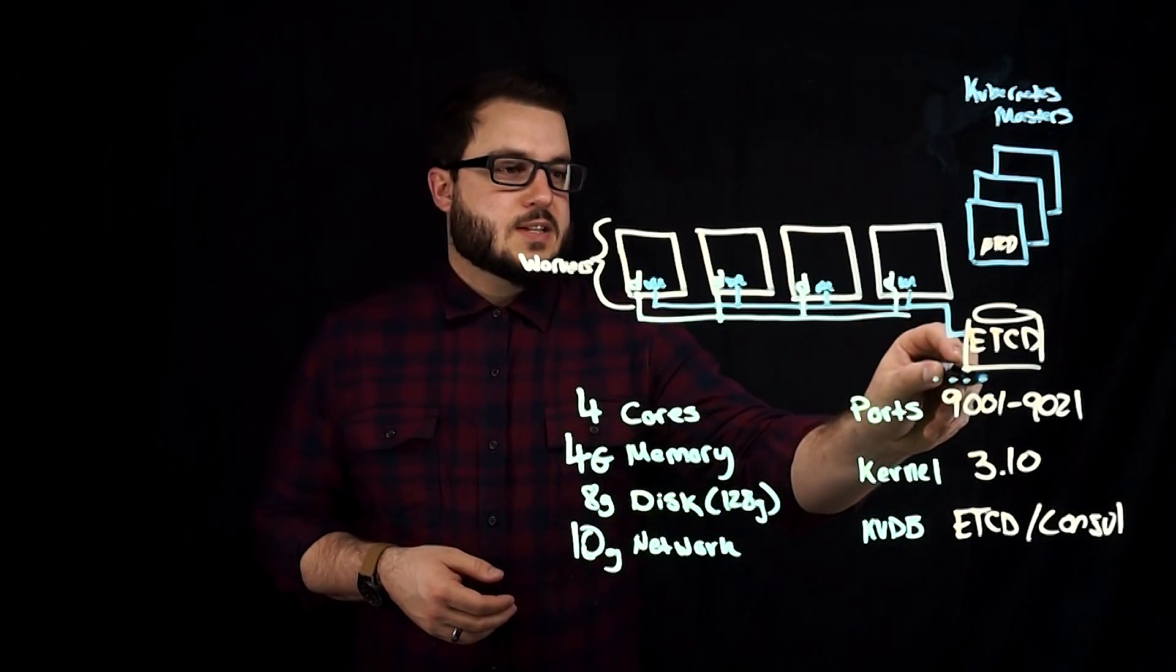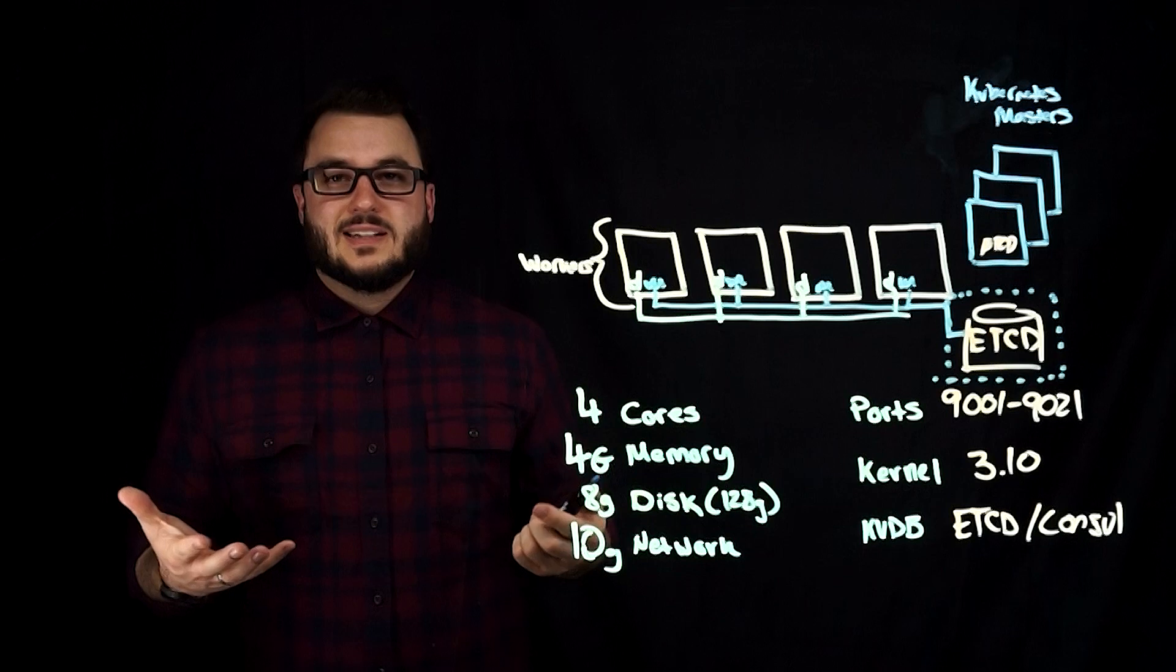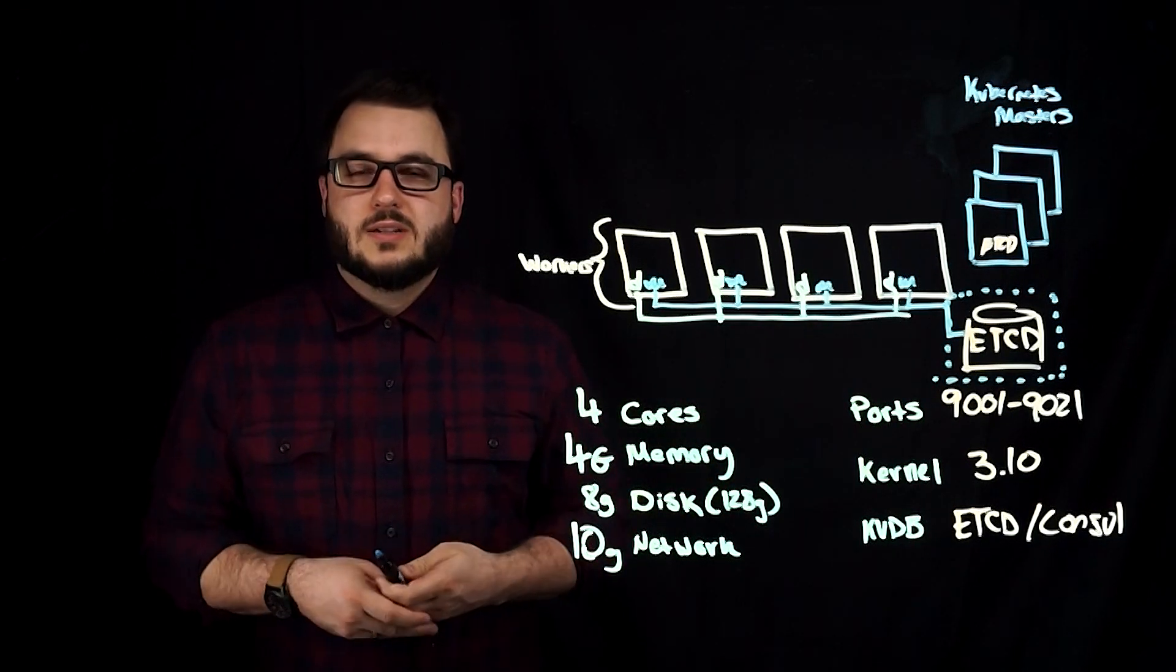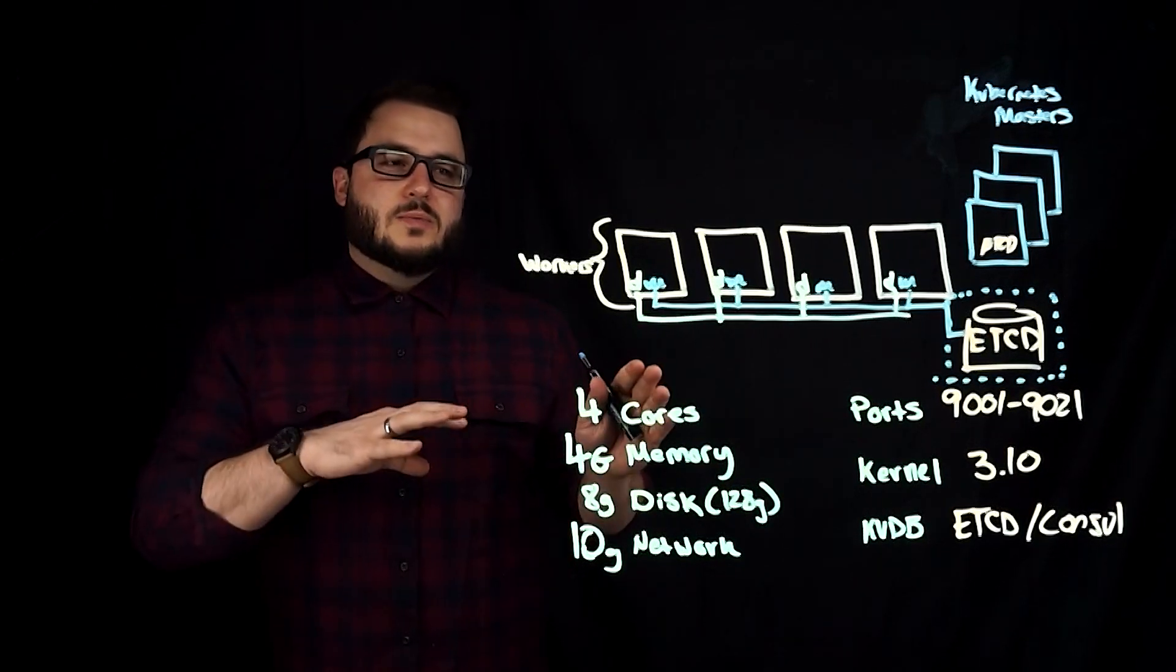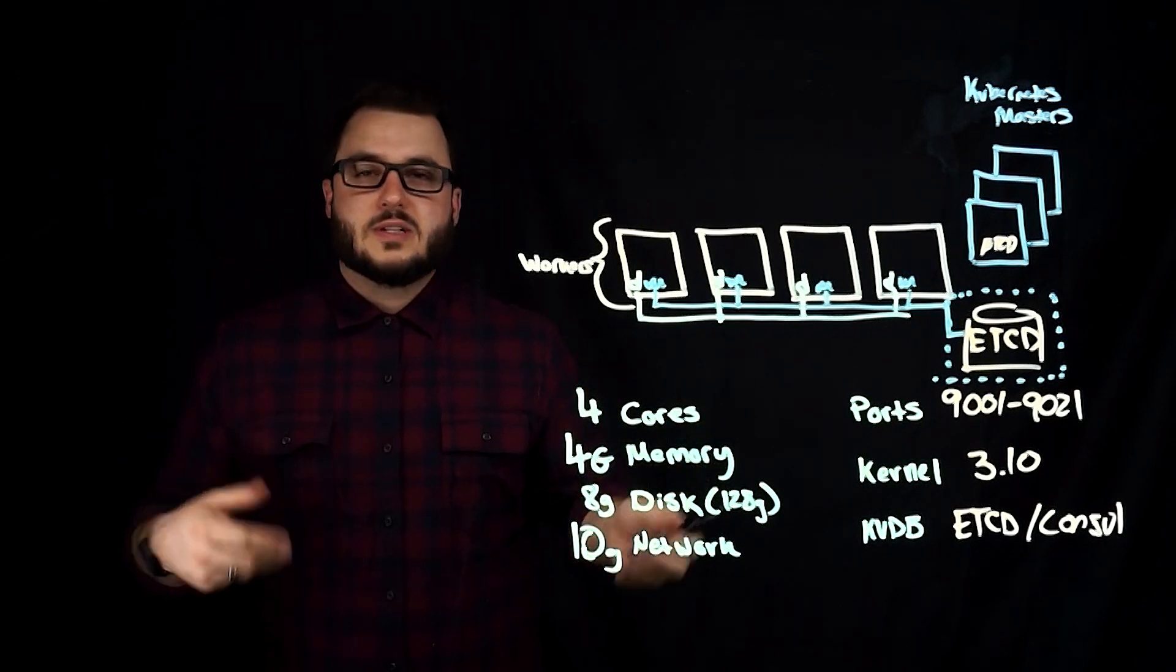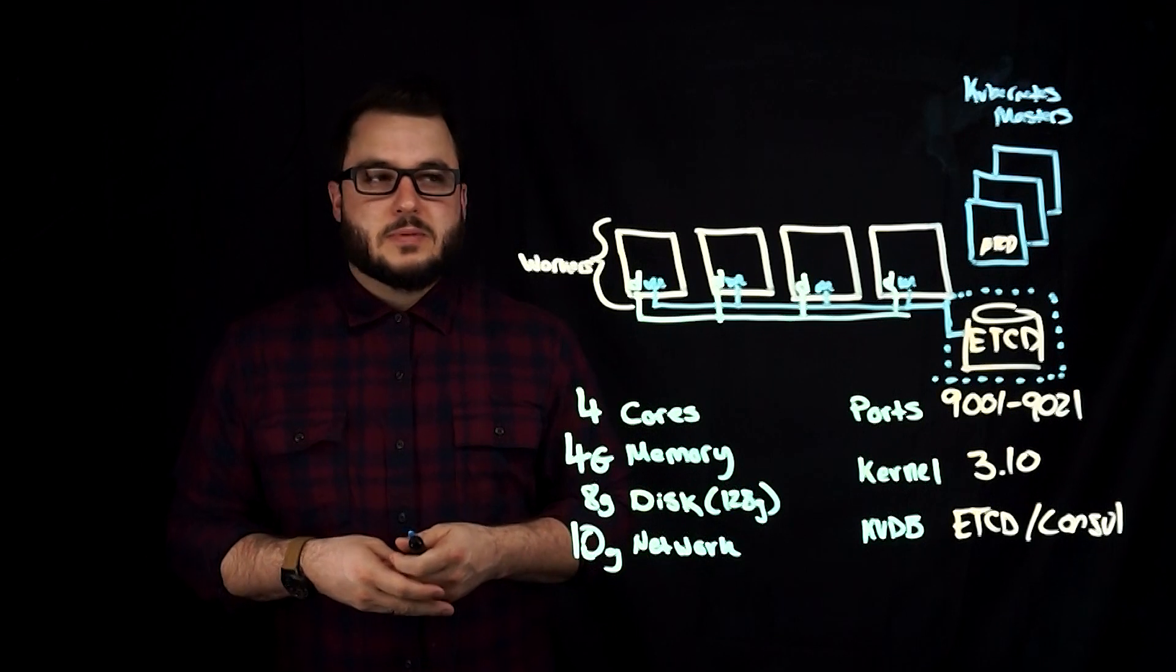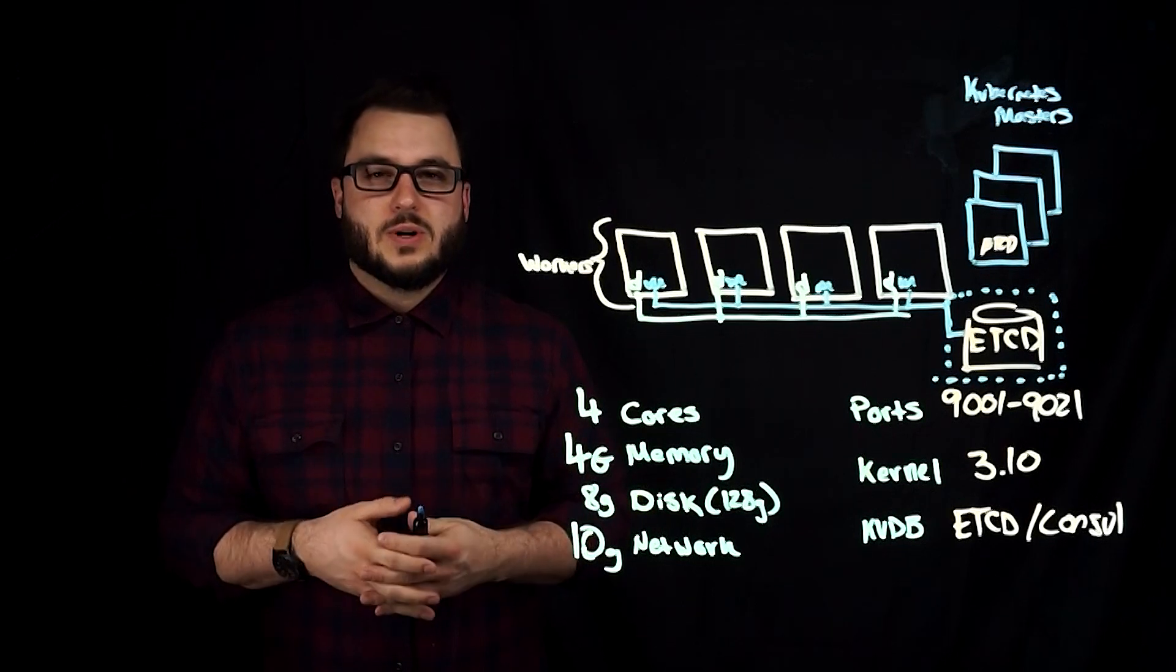This is a good idea to have on a separate failure domain as well as make sure to configure it with compaction and backups and snapshots so that you can recover that etcd database. Same things you do for your Kubernetes etcd database. There is an option to have a built-in key value store, which means Portworx spins one up and maintains the whole thing for you. It even takes snapshots. There are operations to back up and restore from that internal one. That's under 20-25 Portworx nodes.